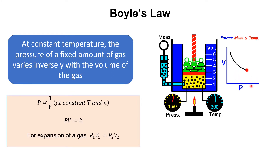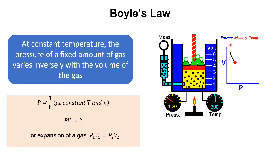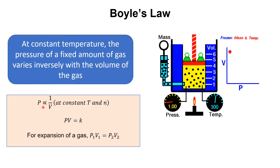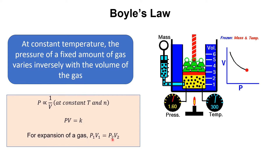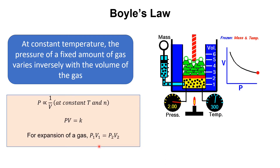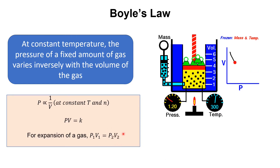Here you can see a graph in which pressure versus volume is drawn. Initially the volume was more and the pressure was less, but as pressure increased, the volume decreased. So the relation will be P is inversely proportional to volume, and PV is equal to constant. For any expansion or compression of a gas, P1V1 equals P2V2, where P1V1 are the parameters at initial conditions and P2V2 are the parameters at final conditions.